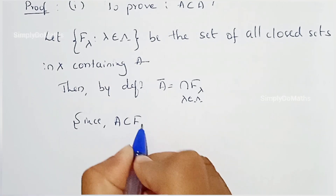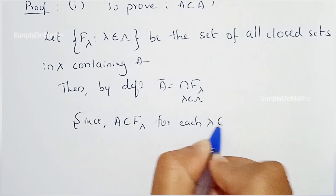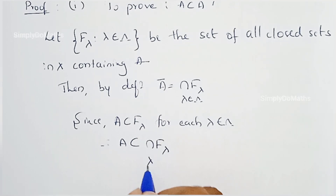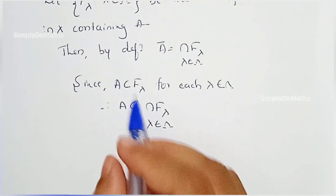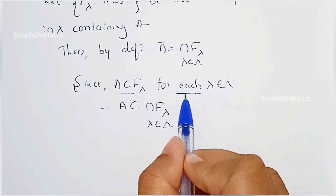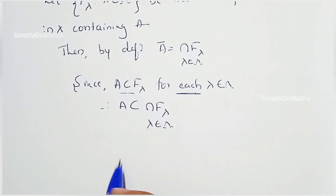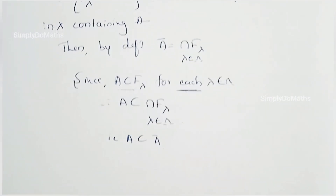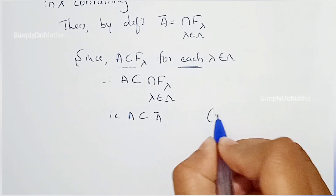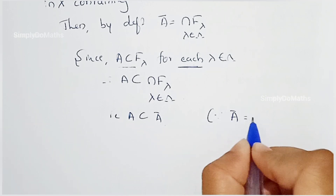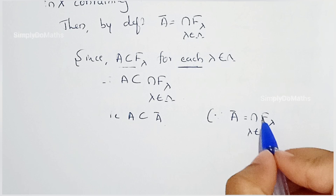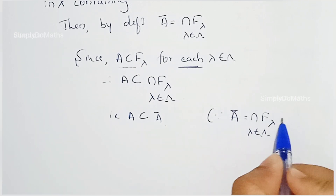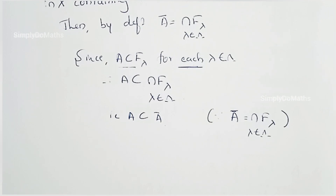Since A is a subset of F_λ for each λ in the index set, A is a subset of the intersection of F_λ over the index set. Since this holds for each λ, we can take the intersection, which implies A is a subset of the intersection of F_λ — which is nothing but Ā, by the definition of closure. Therefore, A is a subset of Ā, which proves the first property.